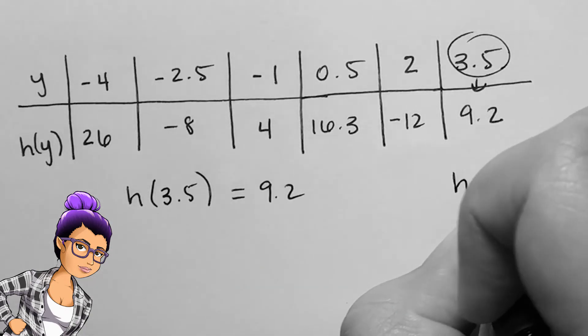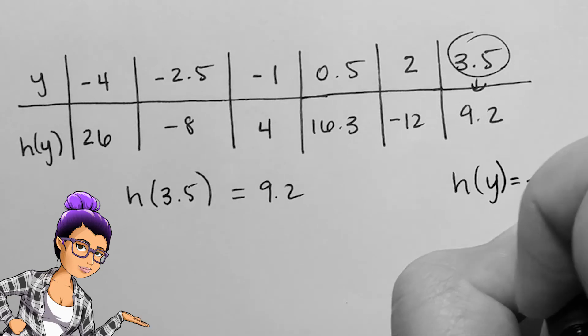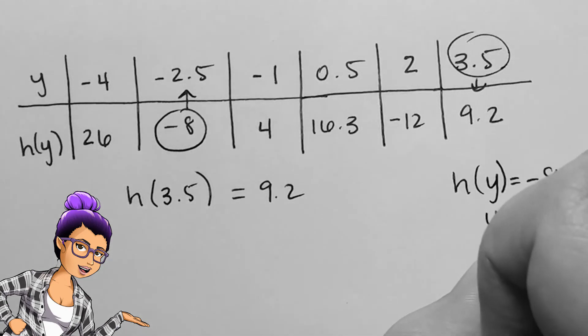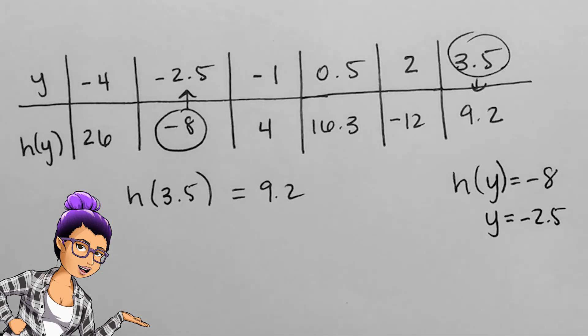I could also find inputs for a given output. If I'm told that h of y equals negative 8, then I should find negative 8 in the output row and see which input goes with it, which is negative 2.5.